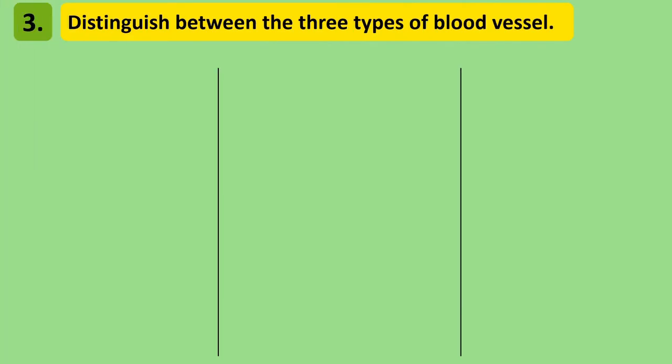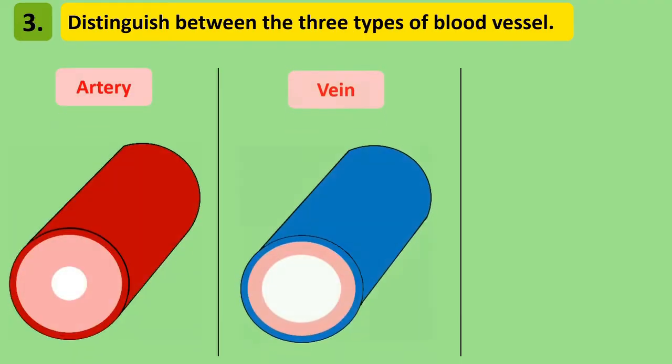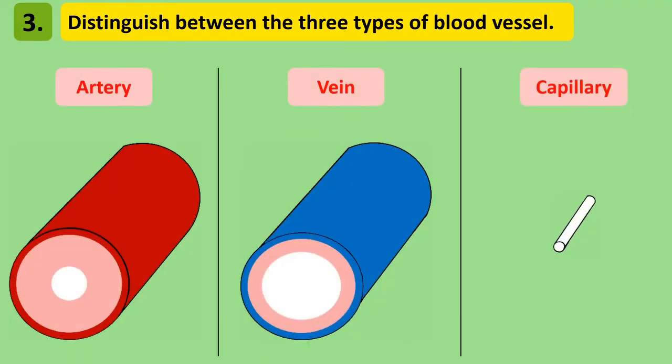Finally, let's take a look at the types of blood vessel we can find in the body. Blood vessels are the tube-like structures that blood travels in around the body. There are three types: blood can travel through either an artery, a vein or a capillary.